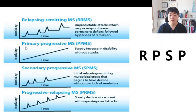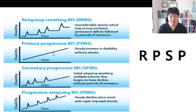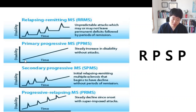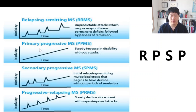The second is Primary Progressive multiple sclerosis. There is a steady increase in demyelination, with signs and symptoms getting worse — just getting worse from the start. That's the primary type.